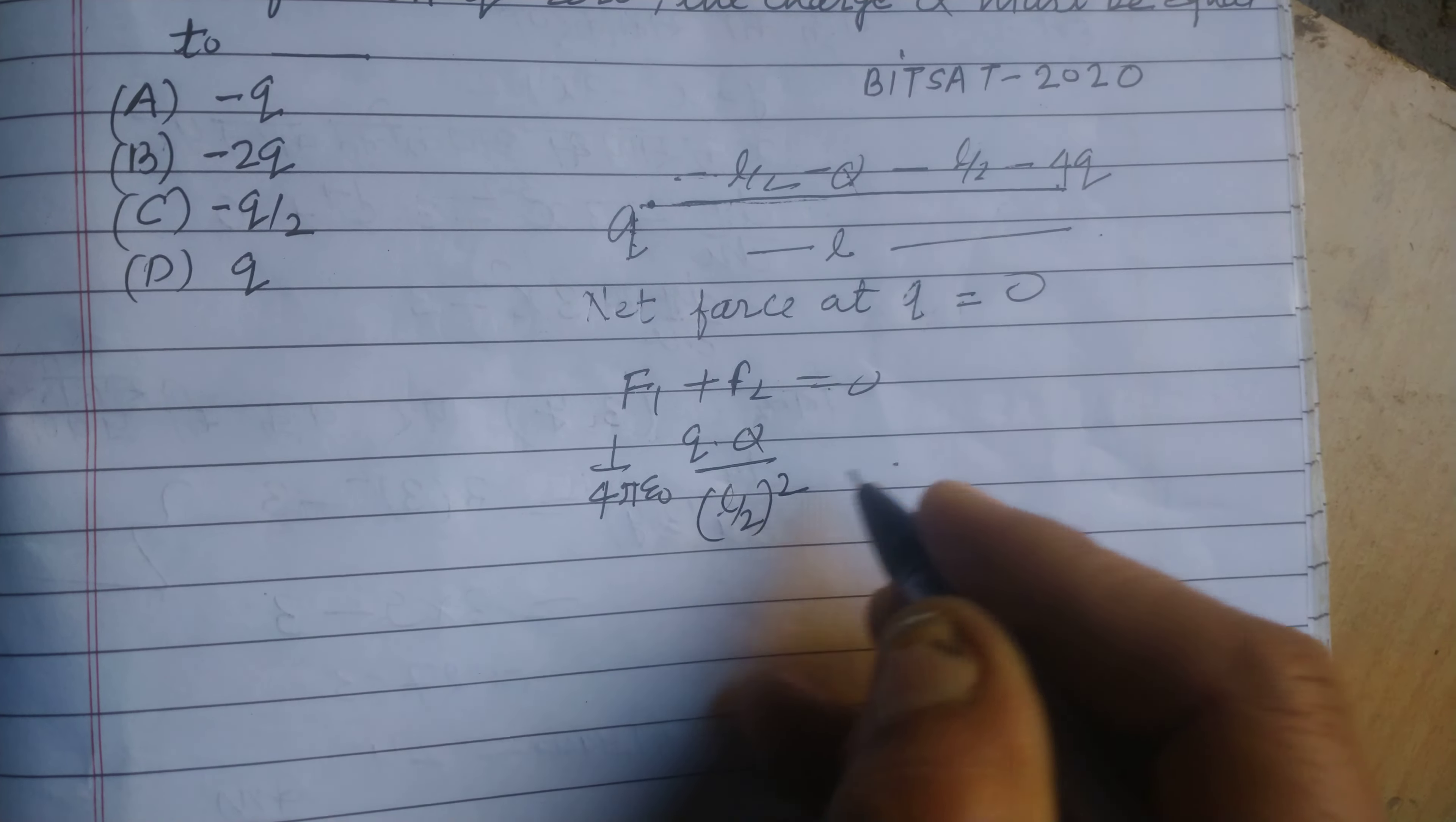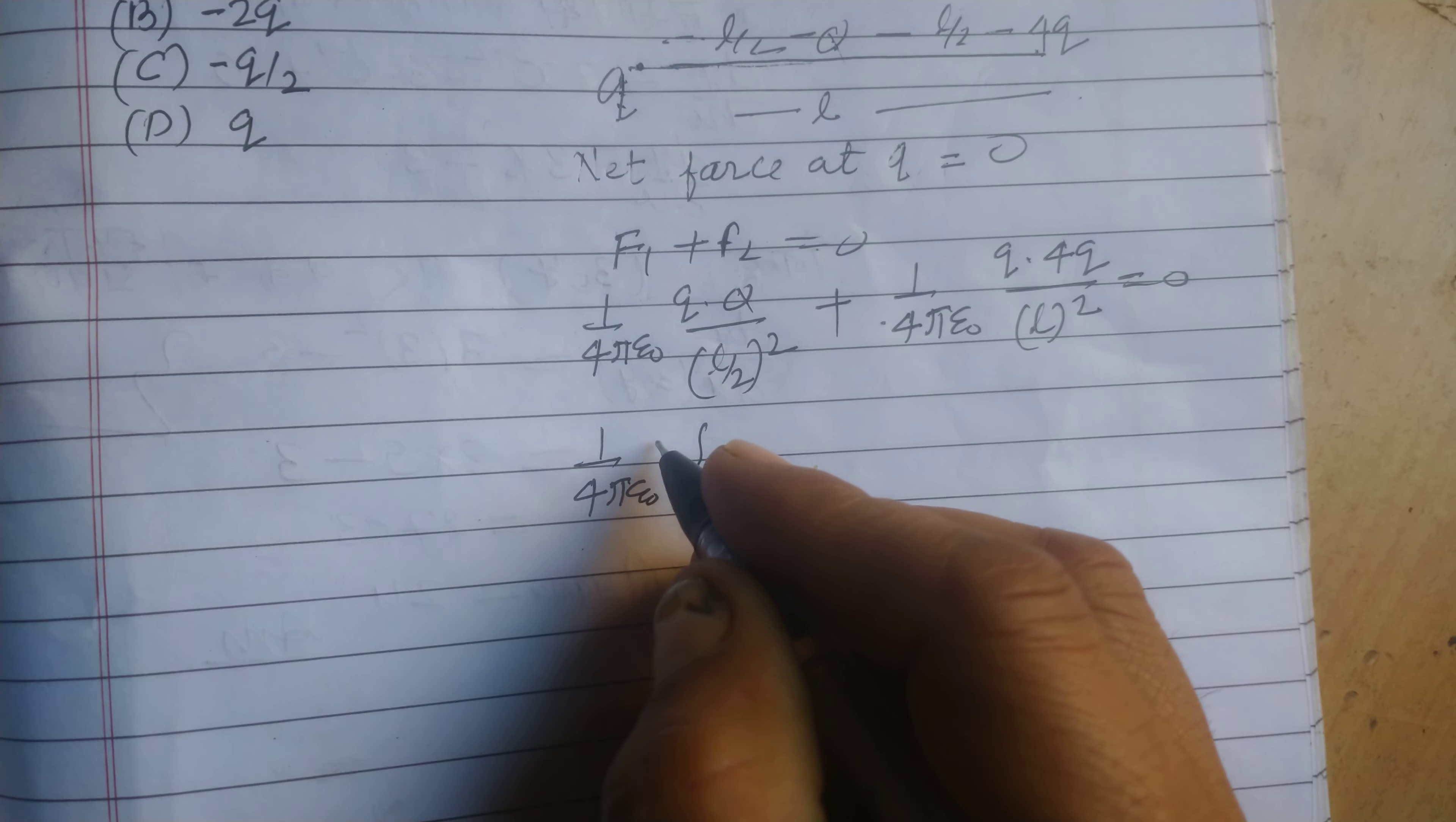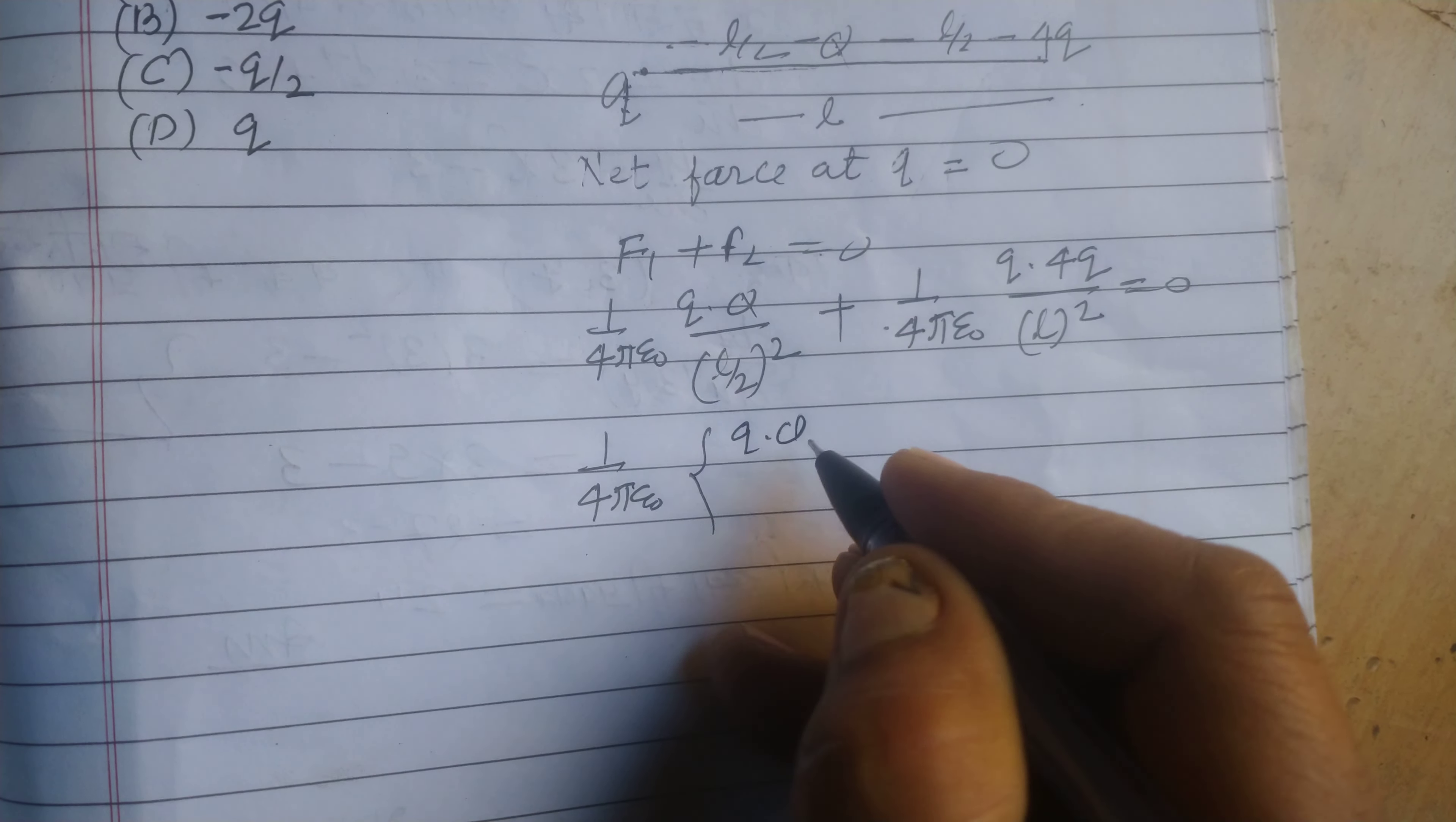And the force between Q and 4Q is 1 upon 4 pi epsilon naught Q into 4Q upon L² equal to zero. Here we take Q upon L² as common. So 1 upon 4 pi epsilon naught Q into Q upon L²...